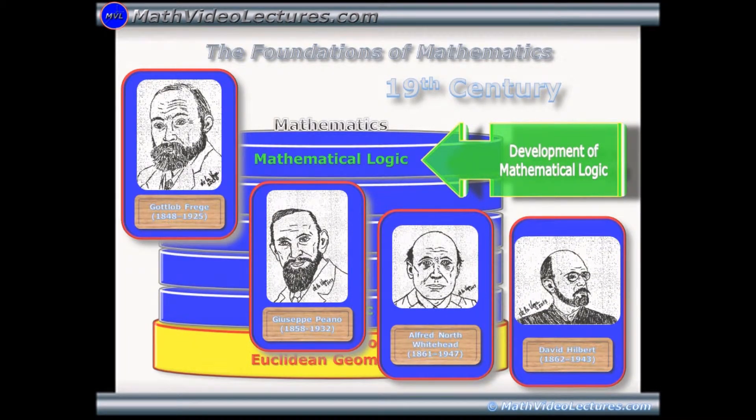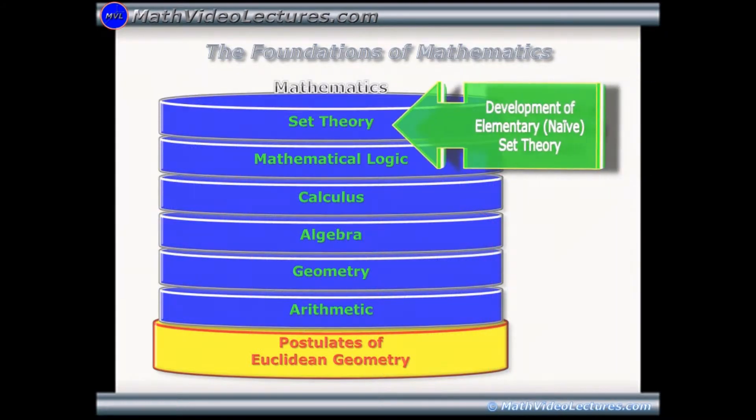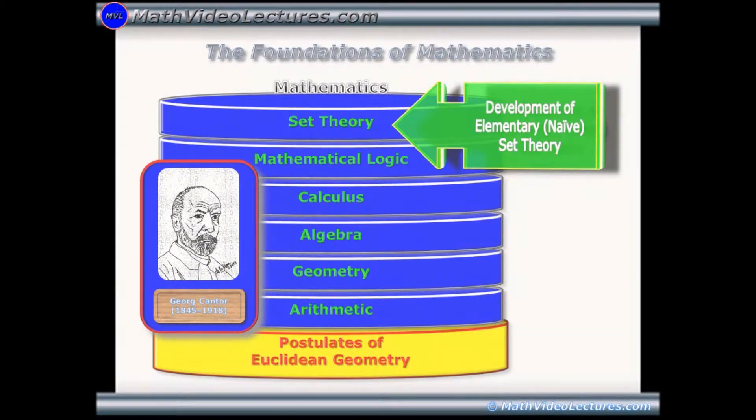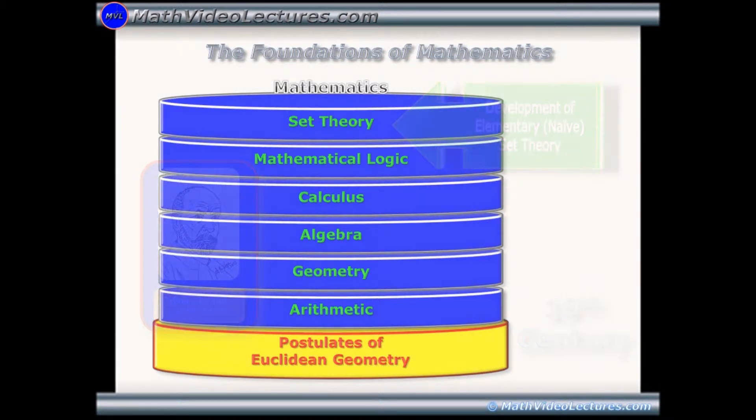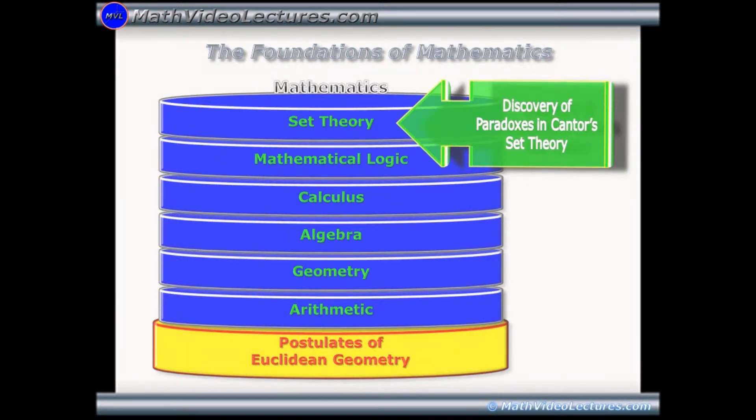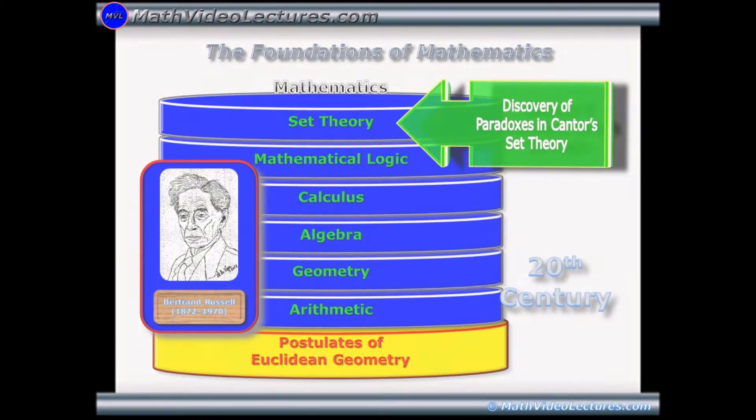The development of the elementary, naive set theory by George Cantor at the end of the 19th century. The discovery of paradoxes in Cantor's set theory by Bertrand Russell and others at the beginning of the 20th century.